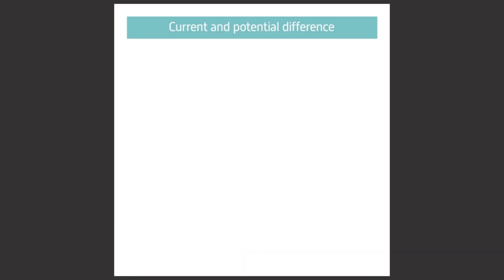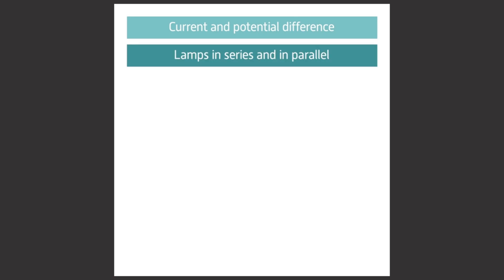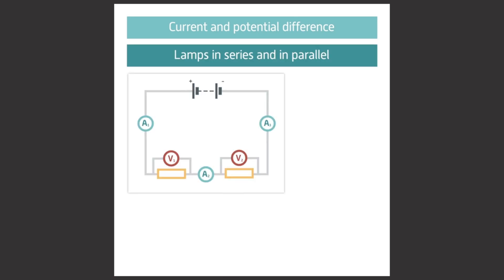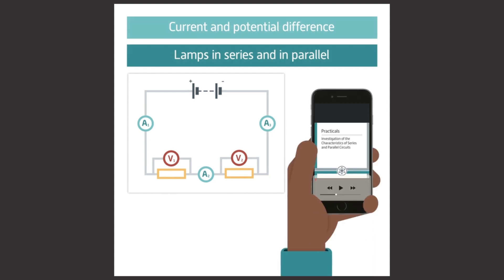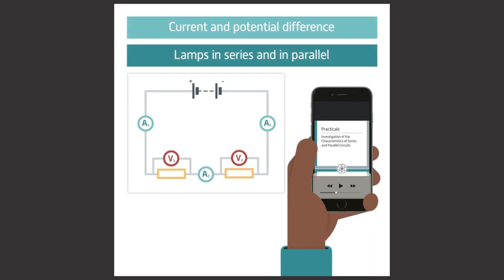In this pod, we'll investigate the current and potential difference of lamps in series and in parallel. It's worth noting that this pod has a lot of circuit diagrams. It's preferable to look at the screen while you listen, but if you can't, be prepared to draw the diagrams yourself.